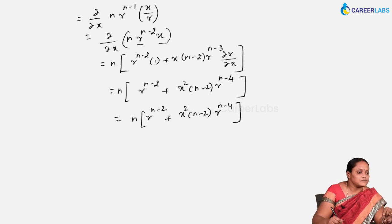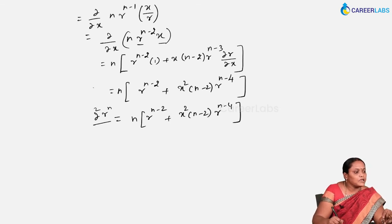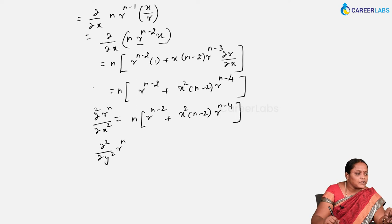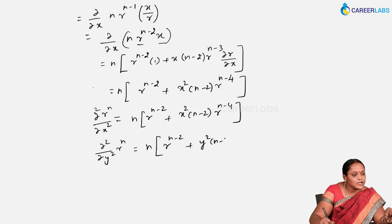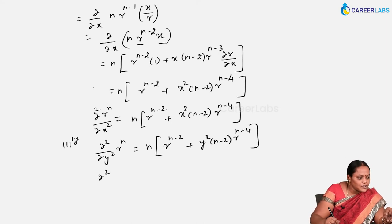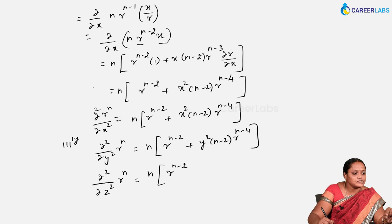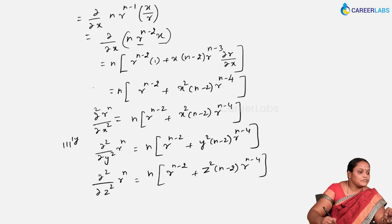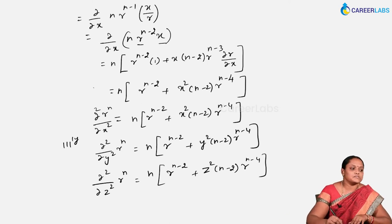Similarly for the other terms: ∂²(r^n)/∂y² gives n·r^(n-2) + y²·(n-2)·r^(n-4), and ∂²(r^n)/∂z² gives n·r^(n-2) + z²·(n-2)·r^(n-4). So we have found all three partial derivatives: ∂²/∂x², ∂²/∂y², and ∂²/∂z² of r^n.